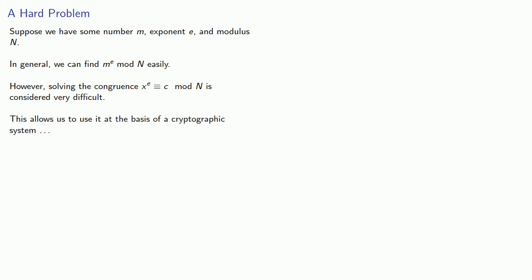Suppose we have some number m, exponent e, and modulus n. In general, we can find m to power e mod n easily. However, solving the congruence x to power e congruent to c mod n is considered very difficult. This allows us to use it as the basis of a cryptographic system, as long as the authorized user can solve the congruence.